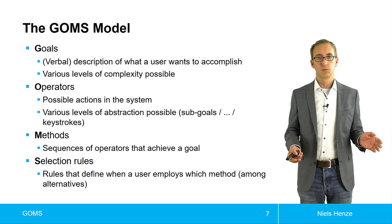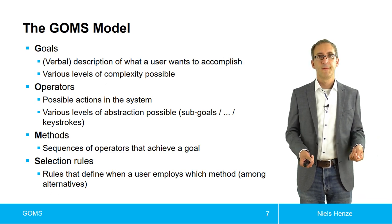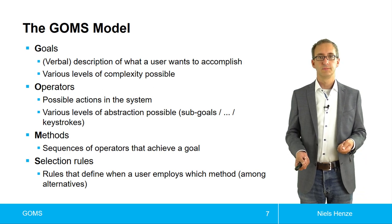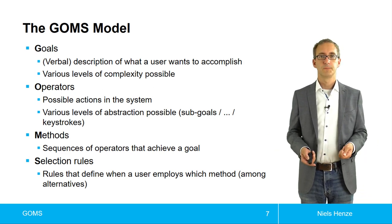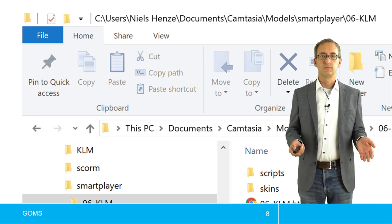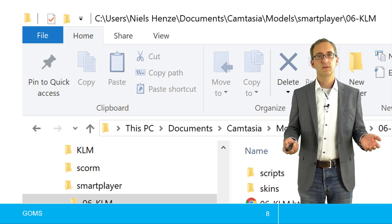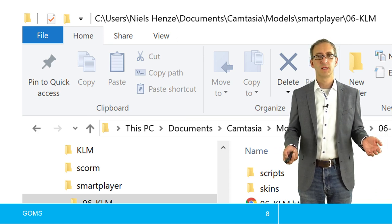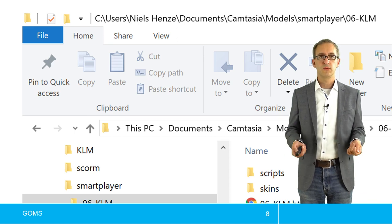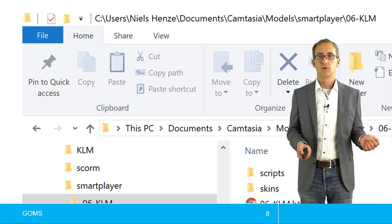And then there's a selection rule. And selection rules are responsible for modeling how users would select one method or the other. So somehow we have to decide that. Let's look at another example. Let's assume I would like to close a window. And there are two different ways or at least two different ways to close menus. One is using the different menus and the other one could be using a keyboard shortcut.